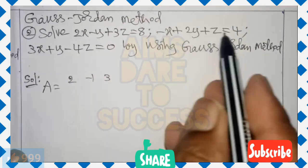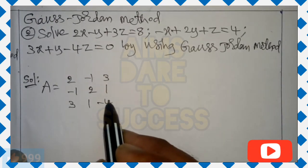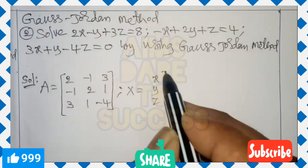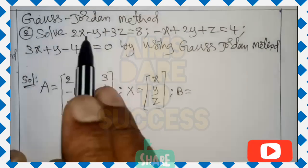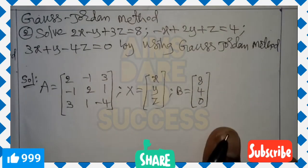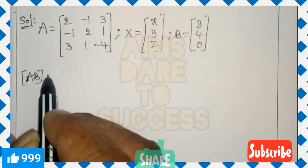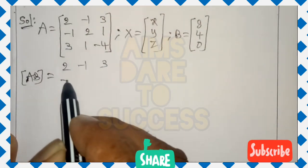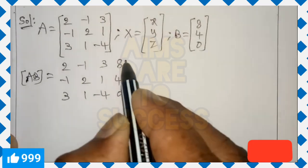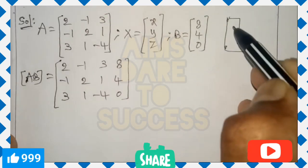I want to write the x, y, z coefficients from the given three equations into matrix A. First equation coefficients: 2, minus 1, 3. Second equation: minus 1, 2, 1. Third equation: 3, 1, minus 4. The variable matrix X contains x, y, z. The B matrix contains the right-side values: 8, 4, 0. We combine A and B into the augmented matrix [A|B]: rows are (2, -1, 3 | 8), (-1, 2, 1 | 4), (3, 1, -4 | 0).